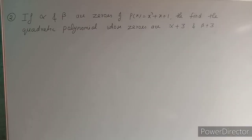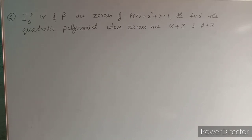Now let's start the second question. If alpha and beta are the zeros of p(x) = x² + x + 1, then find the quadratic polynomial whose zeros are alpha + 3 and beta + 3.